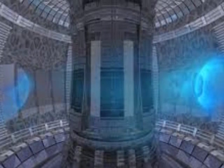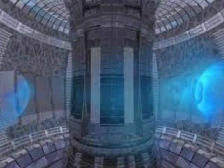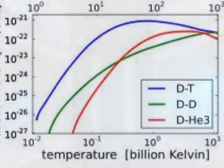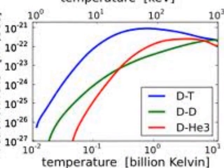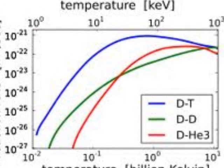This is the only reaction that we can harness because the conditions for all of the others are impossible for us to create. Most other reactions require around 100 million Kelvin temperatures, but deuterium-tritium reactions require only about 40 million Kelvin.